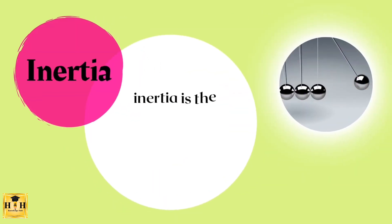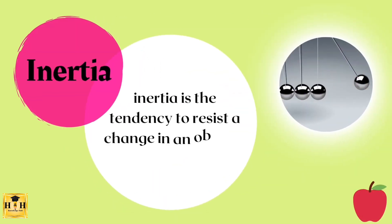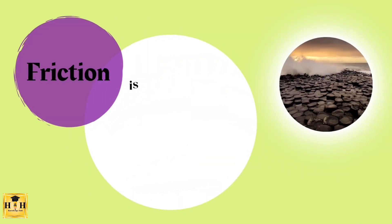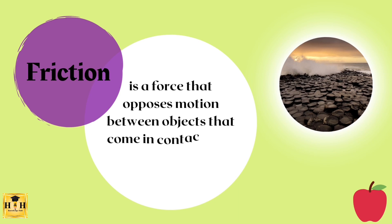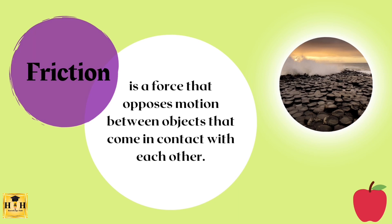Inertia is the tendency to resist a change in an object's motion. For example, an unbalanced force is friction. Friction is a force that opposes motion between objects that come in contact with each other.